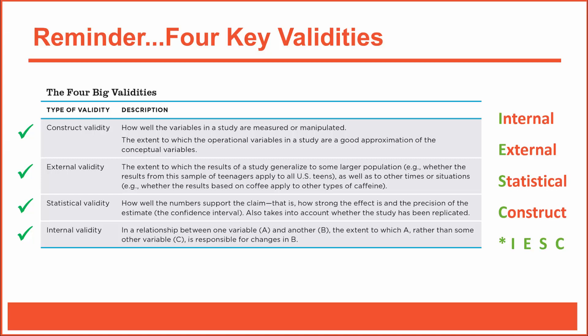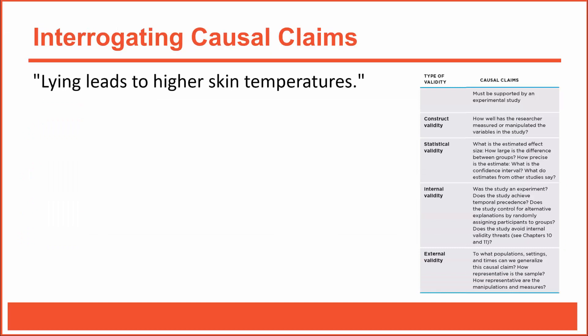All right, let's discuss how to further interrogate this causal claim. We'll start at the top of the table, which states that causal claims must be supported by an experimental research study. So was this research study experimental? Yes, it was. Experiments require at least one variable to be manipulated. In this study, the researchers randomly assigned half of the subjects to be thieves, who lied during an interrogation, and half to be innocent suspects, who told the truth during the interrogation. In other words, they manipulated lying in order to test the effects of lying on skin temperature.